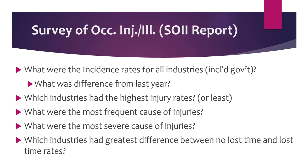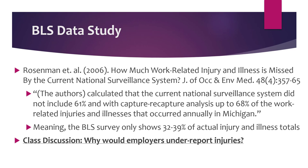What other interesting facts can we learn? When we shift to the non-fatal report: what were the incidence rates for all industries, including government? Because usually it's expressed in just private industry. When you go to the Bureau of Labor Statistics, you need to read the title first, then read the fine print to understand what you're looking at — if you assume, it's going to mess you up. Which industries have the highest injury rates? What were the most frequent and most severe causes of injuries? Which industries had the greatest difference between no lost time and lost time?